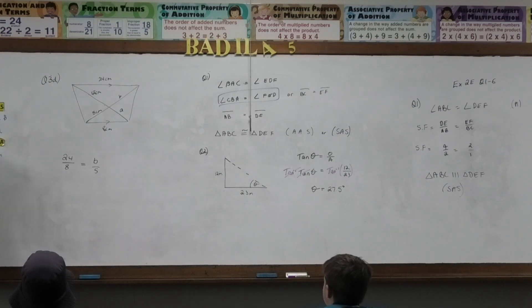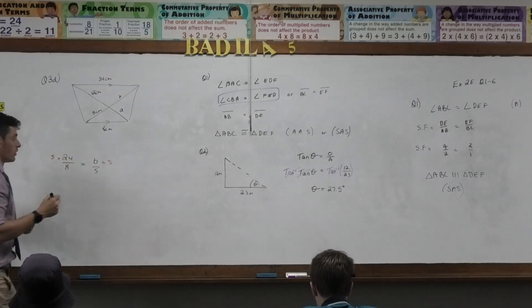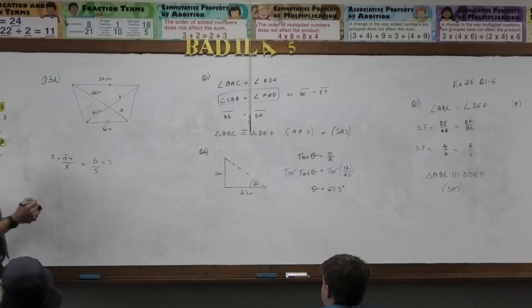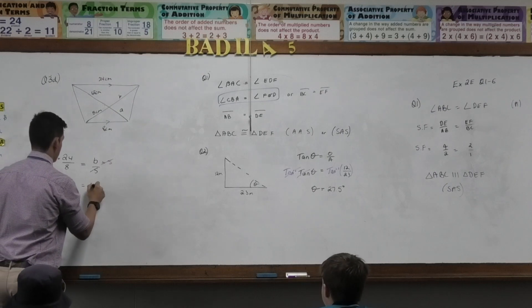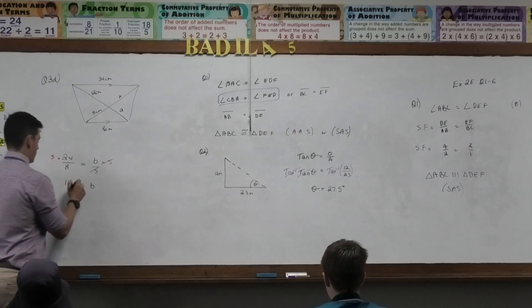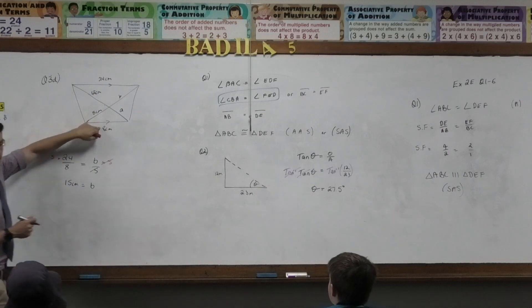When I want to know something about an unknown, what should I do? Get it by itself. So I ask myself, what's stopping the B from being by itself? Susanna, what's stopping the B from being by itself? The 5. How do I undo the 5? Times both sides by 5. Because the 5 is dividing, I multiply both sides by 5 to get rid of it. What happens to the 5s on the right-hand side? They cancel each other out. I'm left with B equals 24 times 5, which is 120 divided by 8, which is 60 over 4, which is 15. I could also say that 24 over 8 is 3, 3 times 5 is 15. That's probably the easier way to do it.